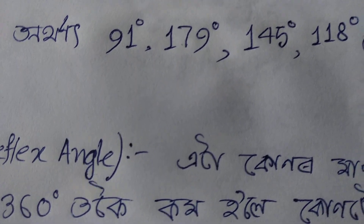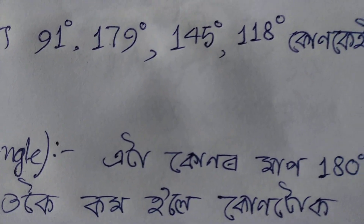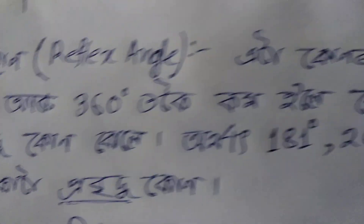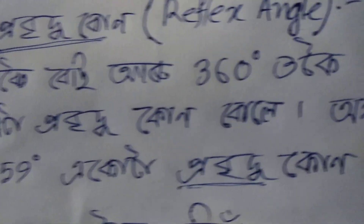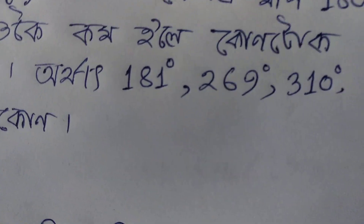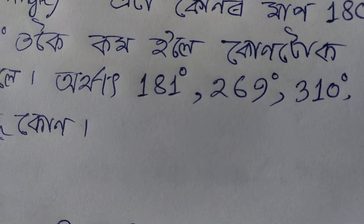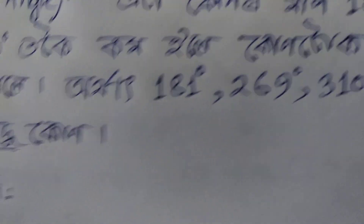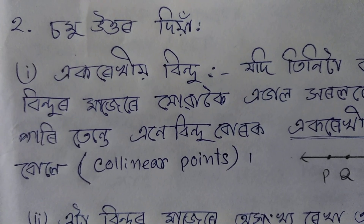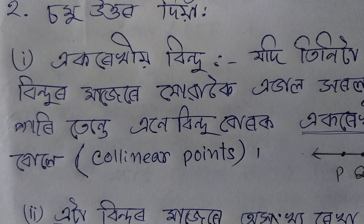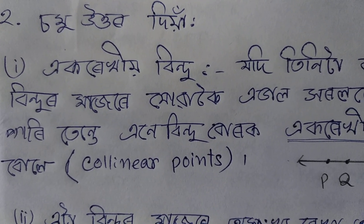The map is less than 80 degrees, and it is less than 80 degrees. The map is less than 80 degrees, and it is less than 360 degrees. The map is less than 80 degrees, and it is less than 80 degrees. The map is 181 degrees, 269 degrees, 310 degrees, and 359 degrees. The map is less than 80 degrees.